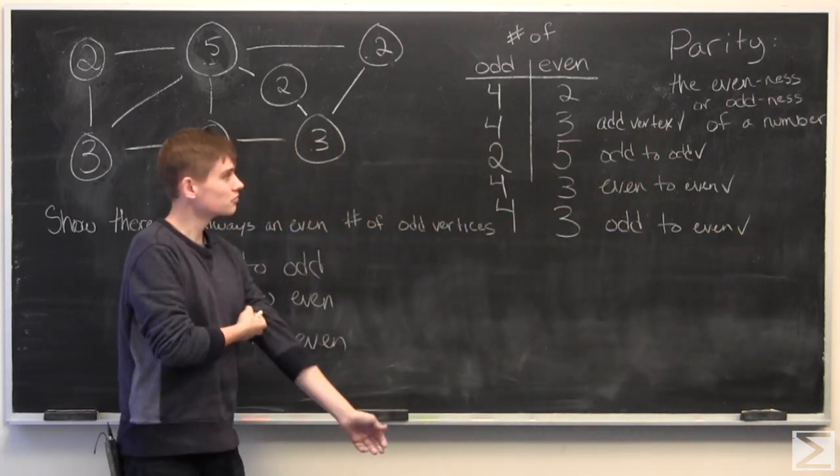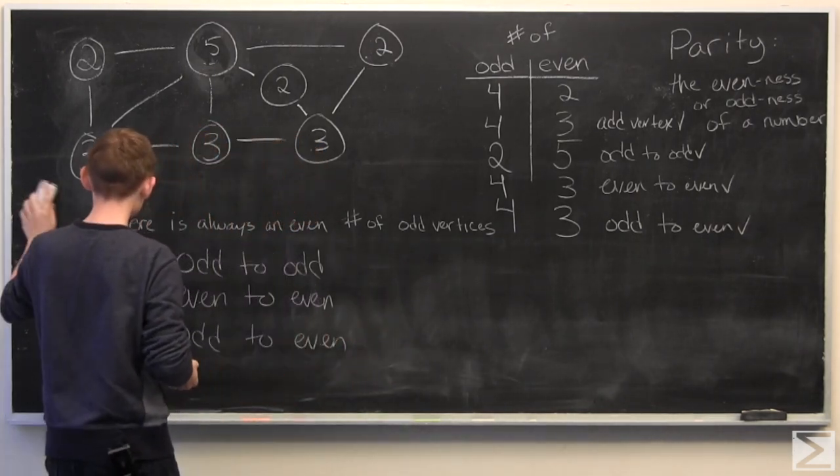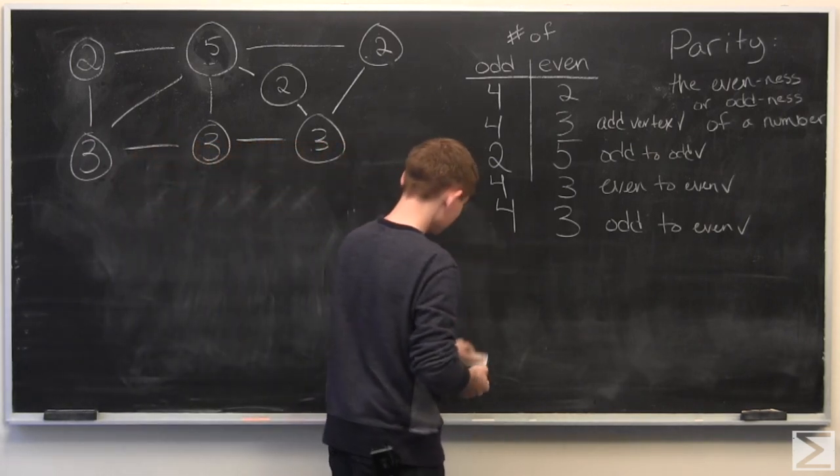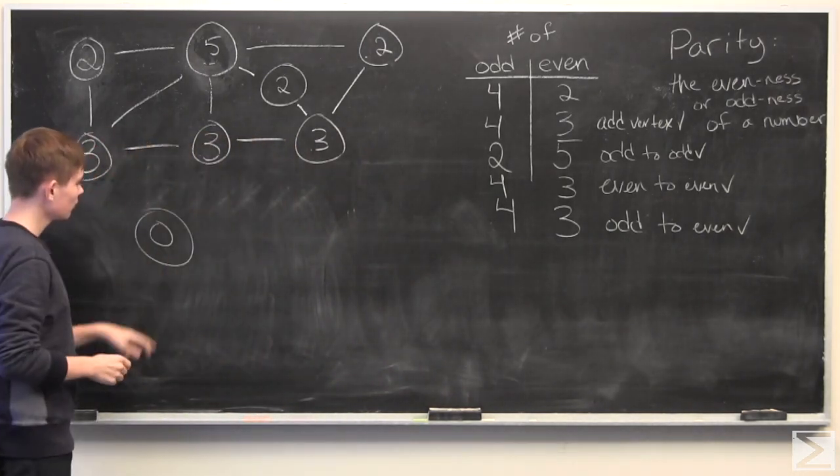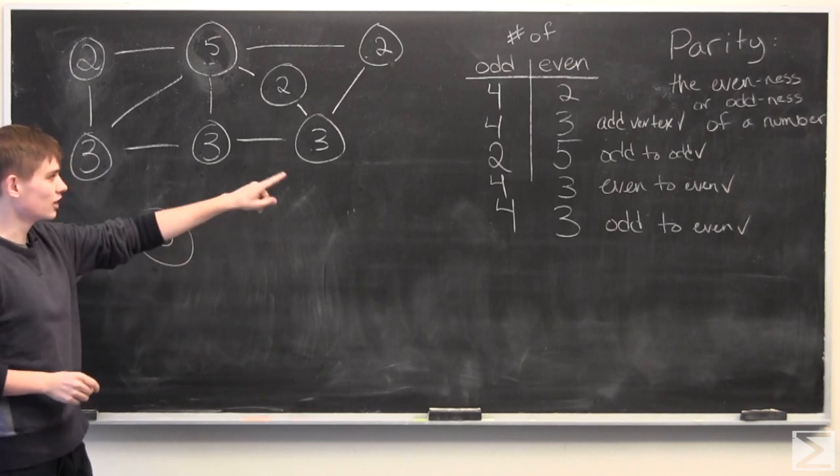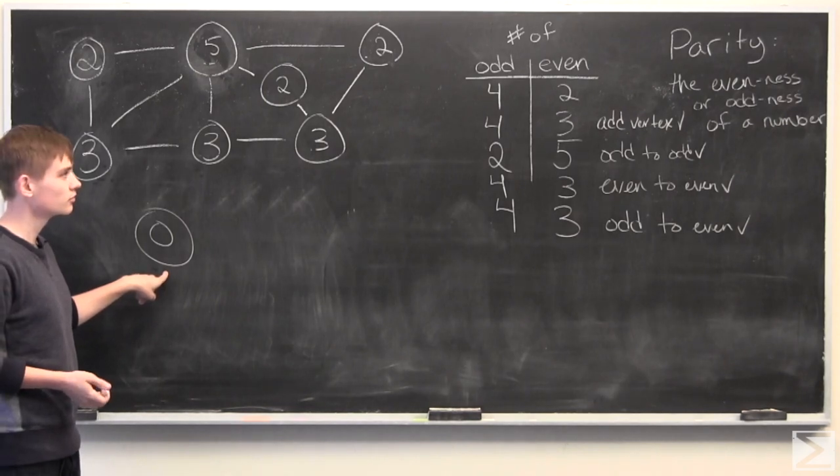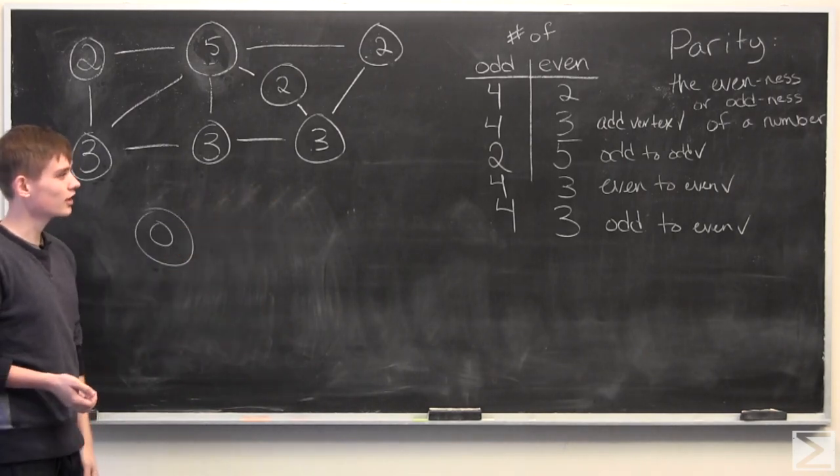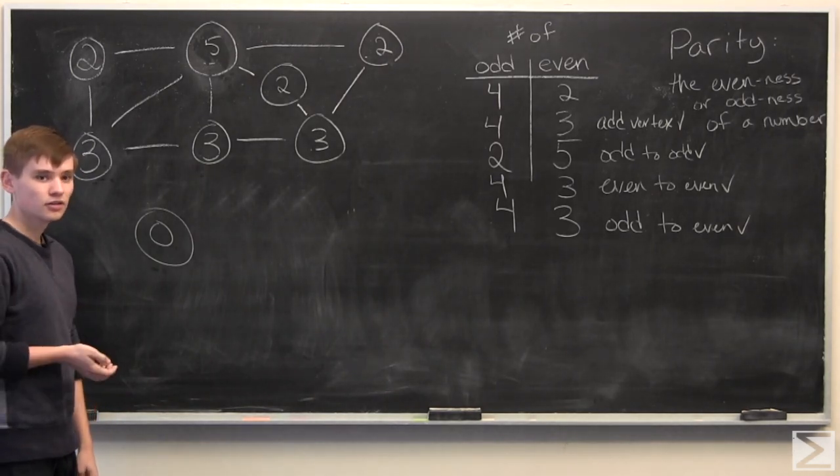And we've checked every possible thing you can do to a graph. And therefore, you can form an inductive proof where you start off with one vertex. And you can add vertices, which will conserve the number of odd vertices, which starts out with zero. And then once you have more than one vertex, you can add edges to it. And every way you add edges to it will always conserve the parity of the number of odd vertices.